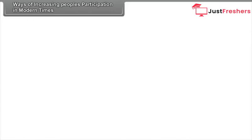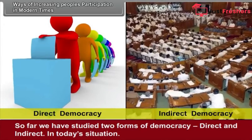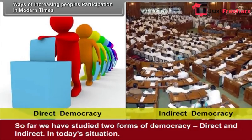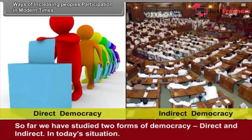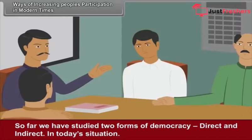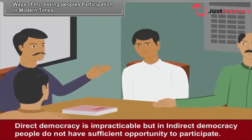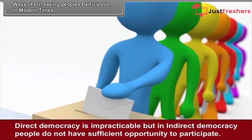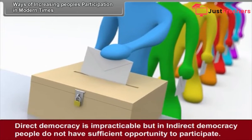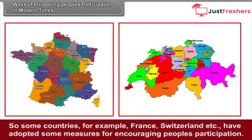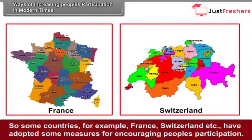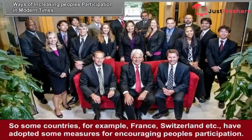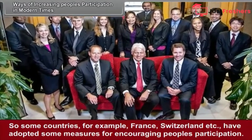There are ways of increasing people's participation in modern times. We have studied two forms of democracy: direct and indirect. In today's situation, direct democracy is impracticable, but in indirect democracy, people do not have sufficient opportunity to participate. So some countries, for example France and Switzerland, have adopted some measures for encouraging people's participation.